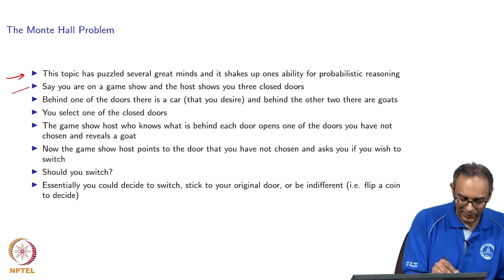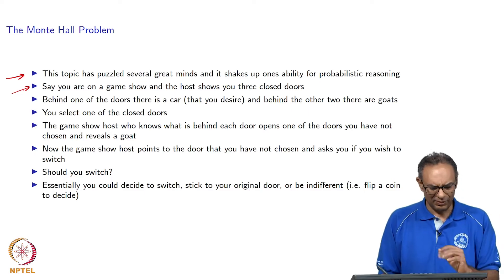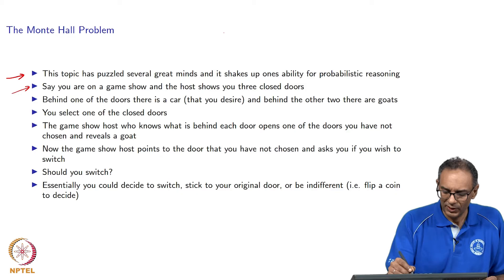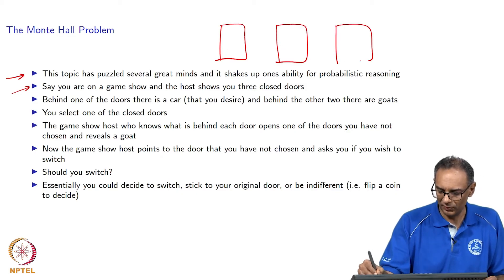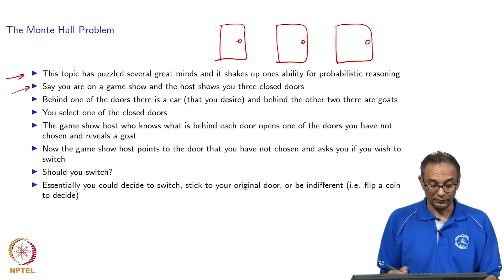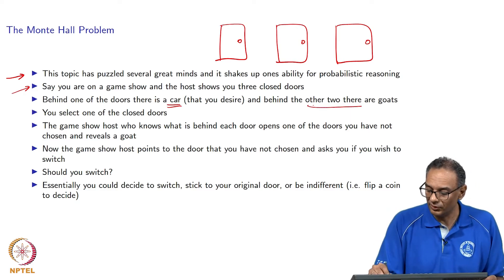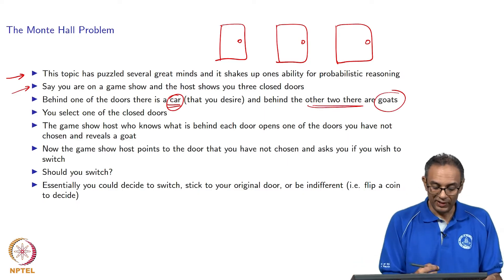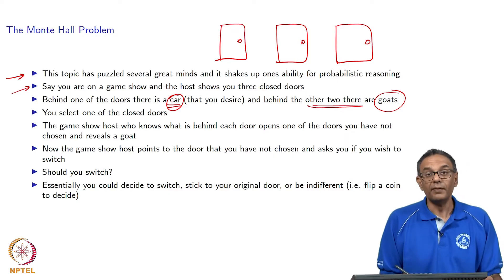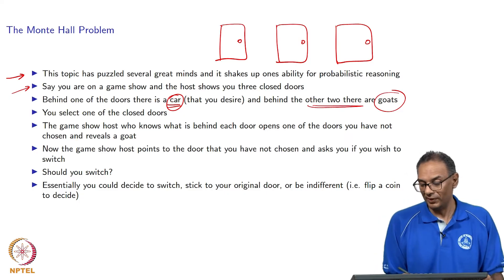Here is the situation. I will explain first and then I will draw a picture. Let us say you are in a game show - this one is a different type of game show. The host shows you three doors. The doors are closed. Behind one door there is a car and behind the other two doors there are goats. I am going to make an assumption that you are interested in the car - a reasonable assumption, as cars are way more expensive than goats.